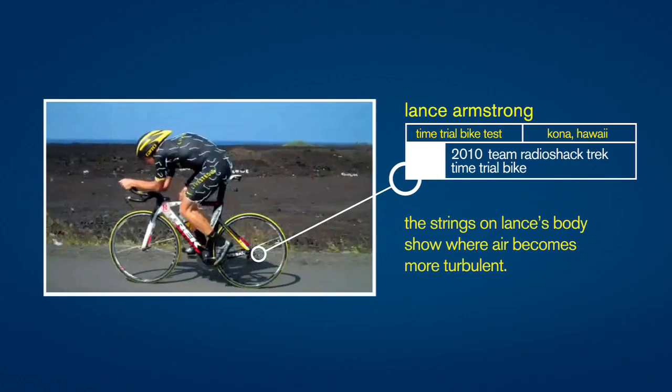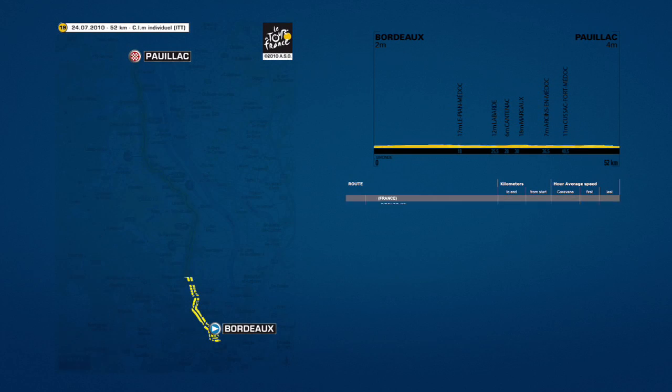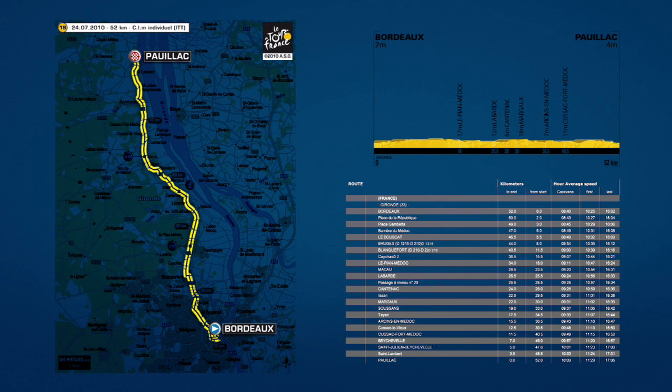We can actually take courses from point A to point B and model those in a computer program through different types of software that we have. You can model it based on the terrain, but also based on the wind conditions that that particular course would see or has seen on that particular day for a given number of years. For example, the final time trial at the Tour this year in Bordeaux is a 30-mile time trial point A to point B. We can analyze the wind data from that section of road over the last 50 years.